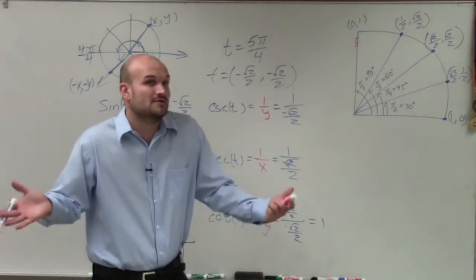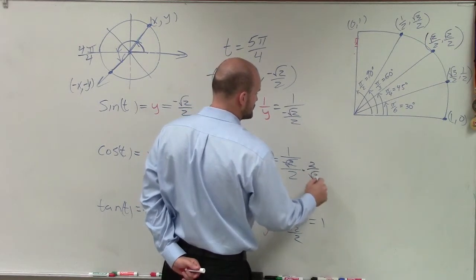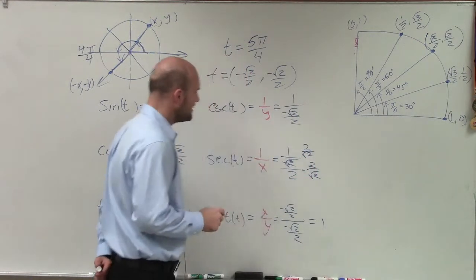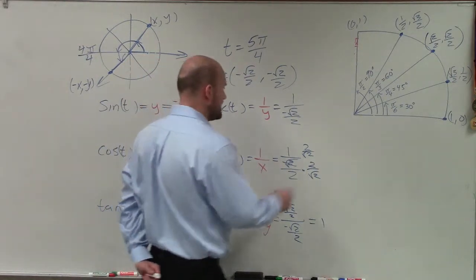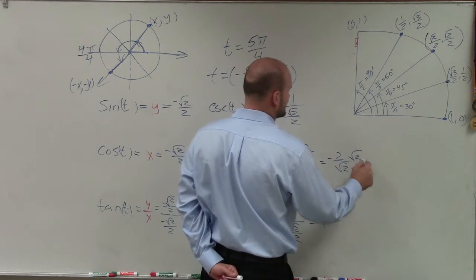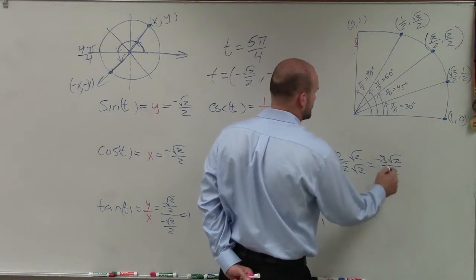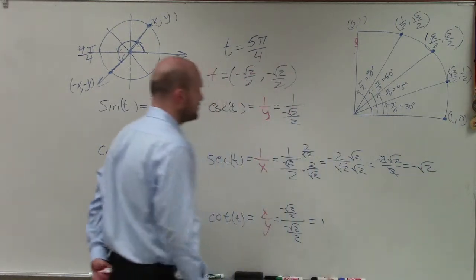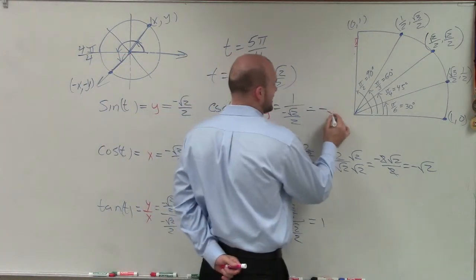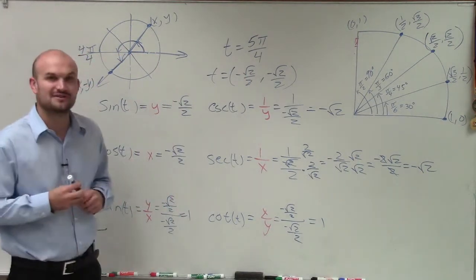Square root of 2 over 2 divided by square root of 2 over 2 — those are exactly the same, so they divide into 1. For secant, I multiply by the reciprocal: 2 over square root of 2. The square roots multiply out, leaving negative 2 over square root of 2. Rationalizing the denominator gives negative 2 times square root of 2 over 2, which simplifies to negative square root of 2. For cosecant, it's the exact same problem, so that answer is also negative square root of 2. That is how you evaluate your six trigonometric functions. Thanks.